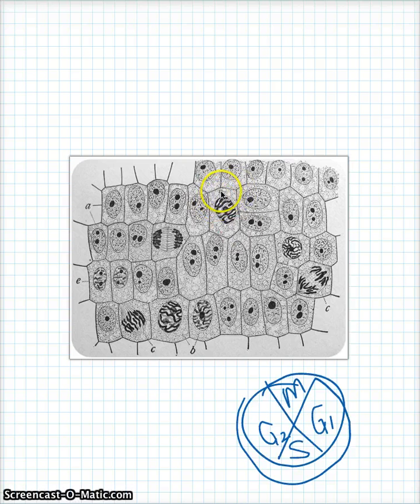All right, this guy right here, prophase. We can tell it's prophase because we can still sort of see the nuclear membrane, and we can still see the little nucleolus, but the chromosomes are starting to show up.